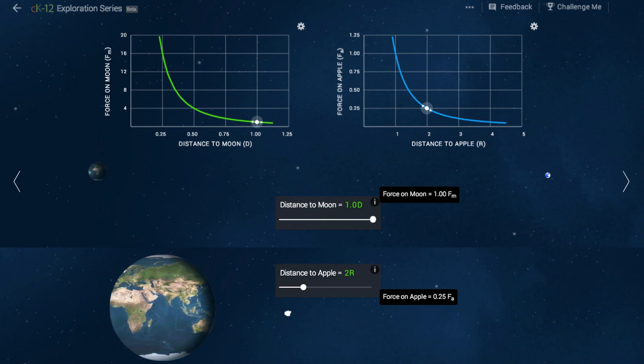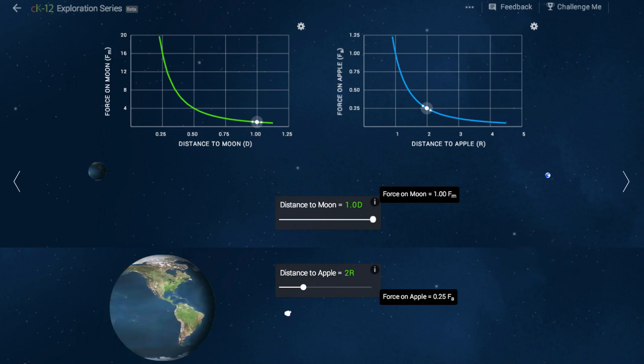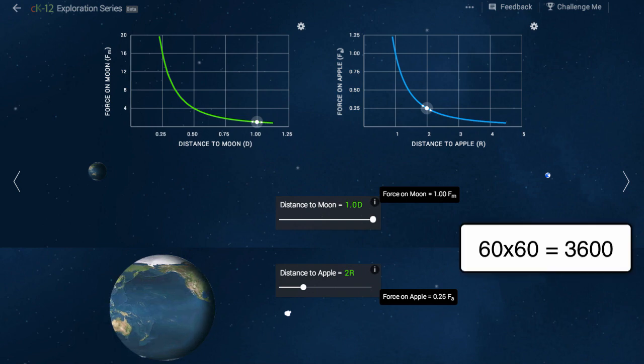Newton said to himself, based on its motion, I can figure out that the moon accelerates by one three thousand six hundredth the rate of an apple on earth. I also know that the moon is 60 times farther away from the center of the earth than an apple. Is it possible that these numbers are related?